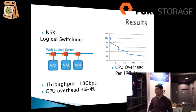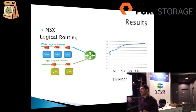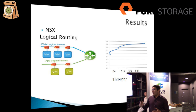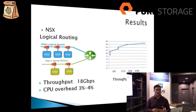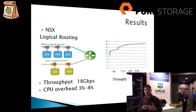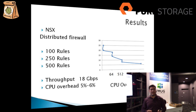The second test involved creating a second logical switch, giving us two network segments connected through the Distributed Logical Router for logical routing. The result was exactly the same — no difference in throughput. There was also no difference in CPU overhead between logical switching and logical routing — the performance was exactly the same.